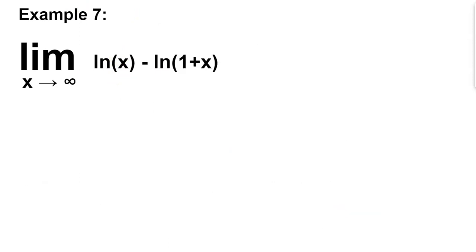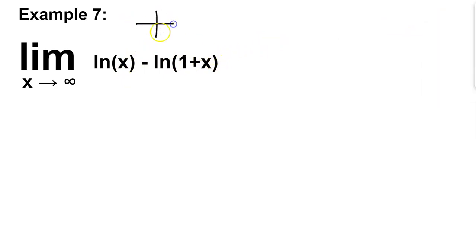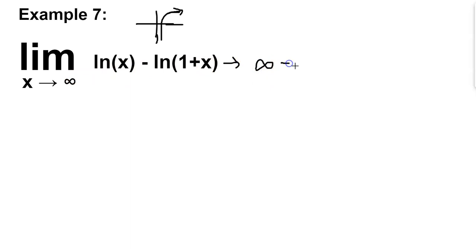In our second example, we're taking x and approaching it to infinity, and we have ln of x minus ln of 1 plus x. The graph of ln of x increases without bounds, so substituting infinity results in infinity minus infinity. This is another indeterminate form, but again it's not something we can directly use L'Hopital's Rule on, so we have to rewrite this whole limit expression.